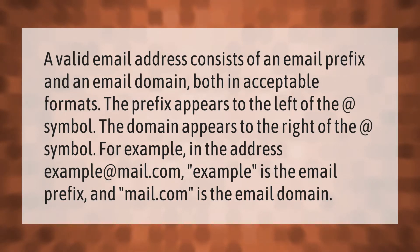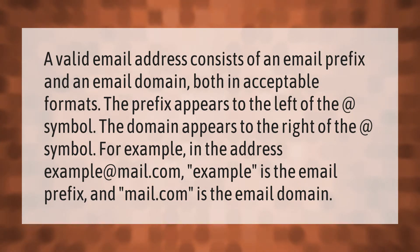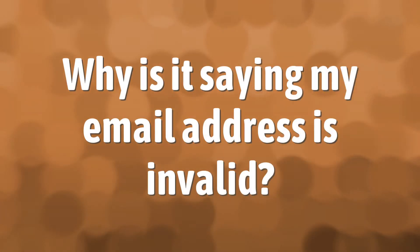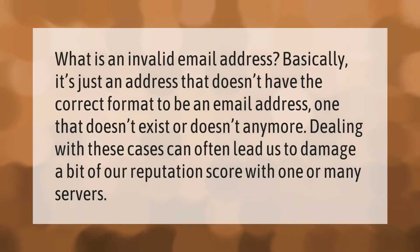A valid email address consists of an email prefix and an email domain, both in acceptable formats. The prefix appears to the left of the at symbol; the domain appears to the right. For example, in the address example@mail.com, 'example' is the email prefix and 'mail.com' is the email domain. An invalid email address is simply one that doesn't have the correct format, doesn't exist, or no longer exists.